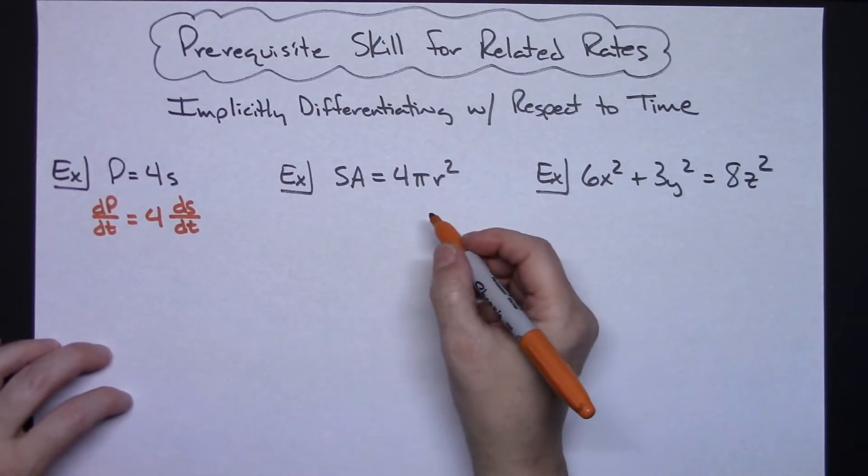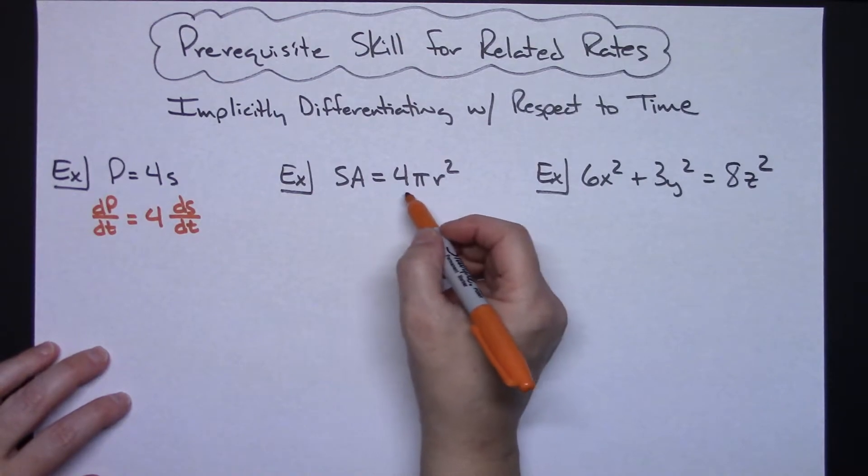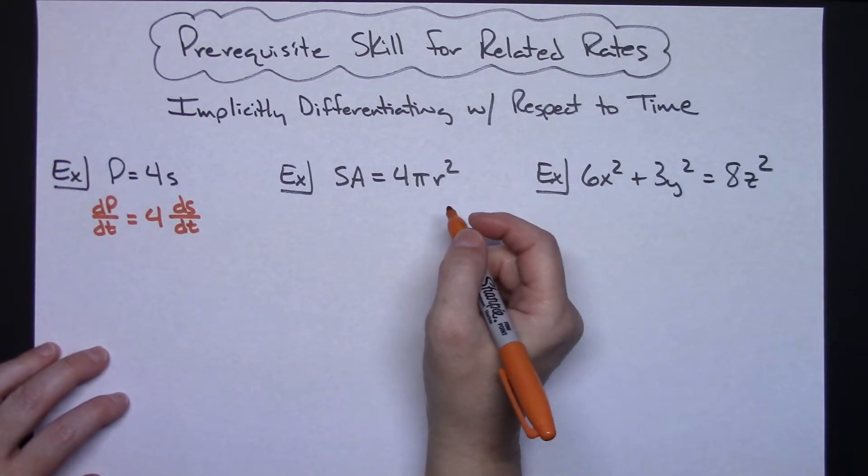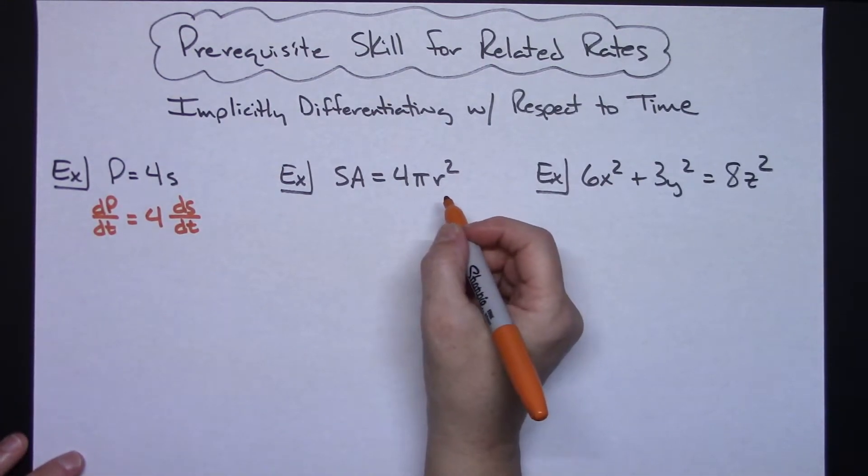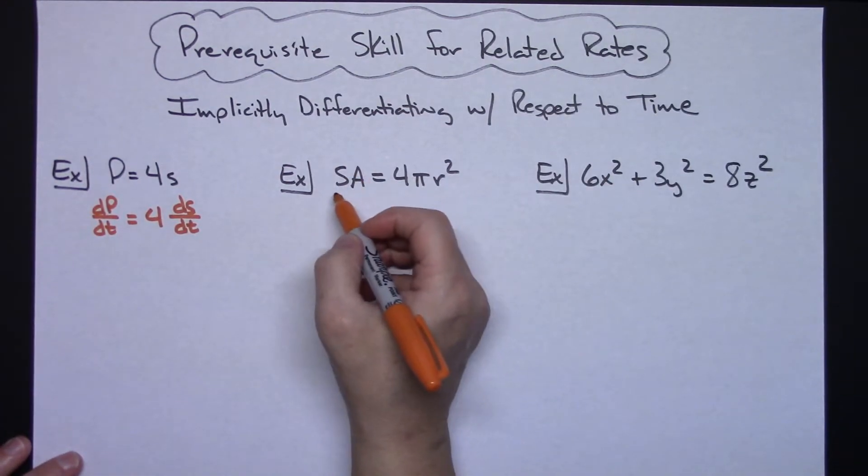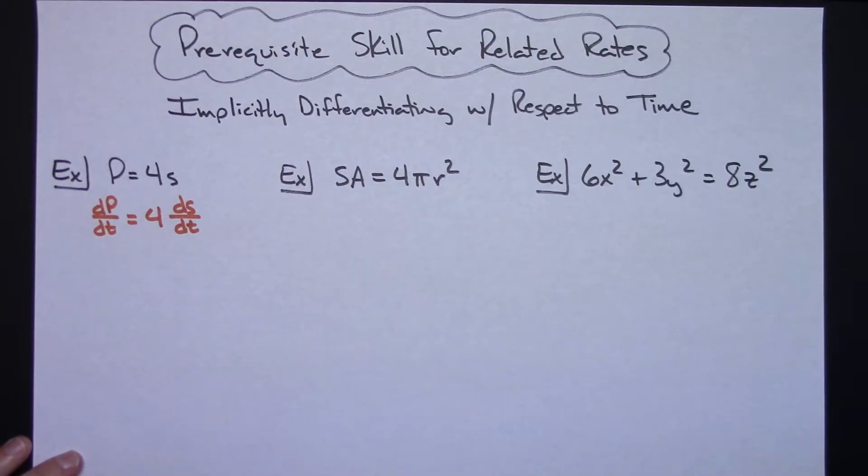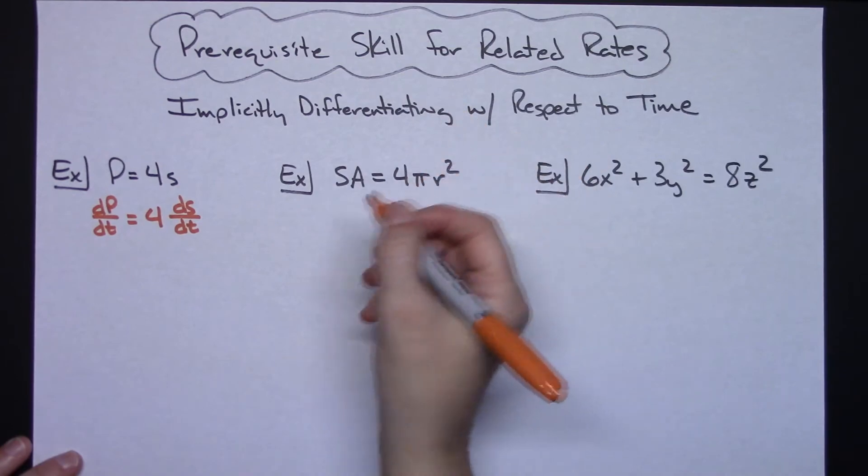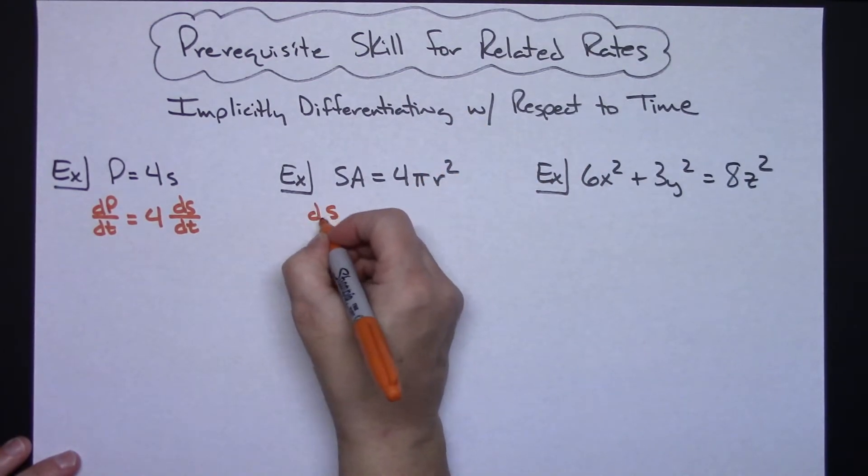Now this one: surface area equals 4πr². Surface area formula, you should recognize this one pretty easily. Again on this left-hand side, if I just differentiate surface area right there I'm going to get a 1 and now with the chain, so dSA/dt.